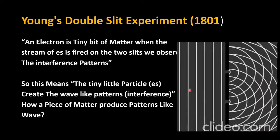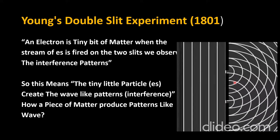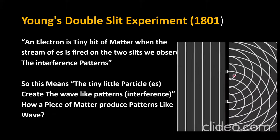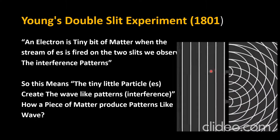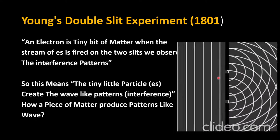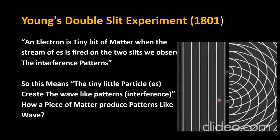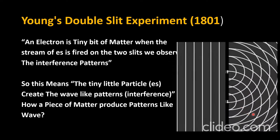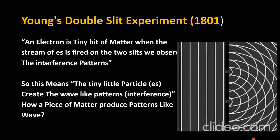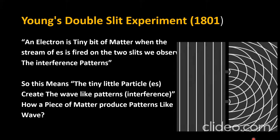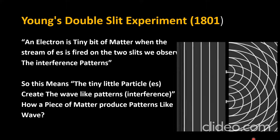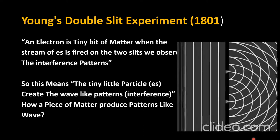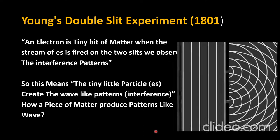A single electron cannot pass through both slits at the same time — it passes through only one. It is the wave associated with the particle that passes through both slits, and these waves interfere with each other to produce the interference pattern. This result demonstrates the wave nature of particles like electrons.